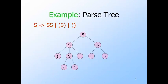Here's a parse tree using the grammar for balanced parentheses that we discussed earlier. Notice how each interior node is labeled by a variable — here, here, here, and here. It must be S because that's the only variable we have. Each leaf is labeled by a terminal, either a left or right parenthesis — here, here, here, here, here, and here.